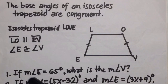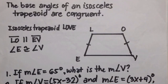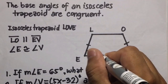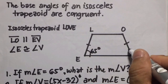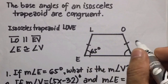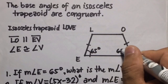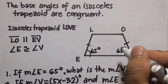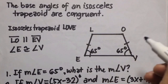Example one: if the measure of angle E is 65 degrees, what is the measure of angle V? Since angle E and angle V are congruent, the measure of angle V is also 65 degrees, because these two angles are congruent and have equal measurements.